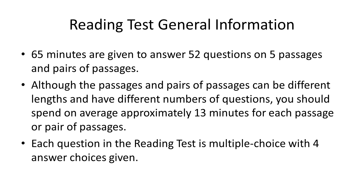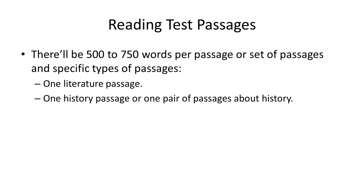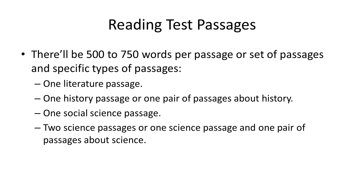Each question in the Reading Test is multiple choice with four answer choices given. There will be 500 to 750 words per passage or set of passages. In addition, there will be specific types of passages: one literature passage, one history passage or one pair of passages about history, one social science passage, and two science passages or one science passage and one pair of passages about science.